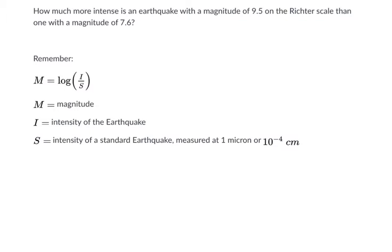So this kind of problem, I've talked about this with you, but I'll give you the equation. I'll tell you what the variables mean. M is magnitude, I is the intensity, and S is essentially like a standard earthquake, a baseline. But it's not zero, it's just kind of like your starting point.